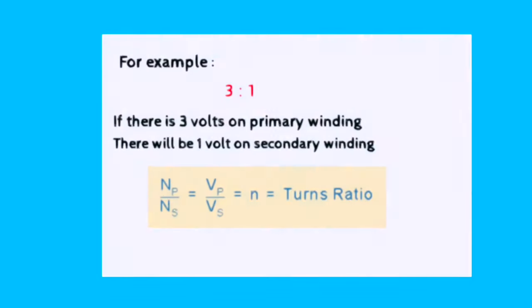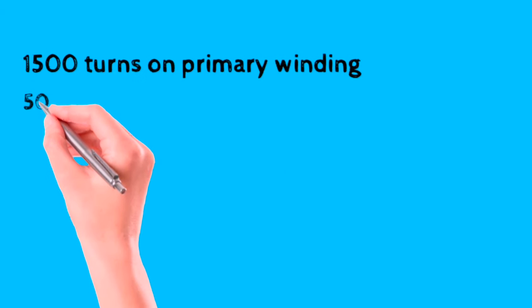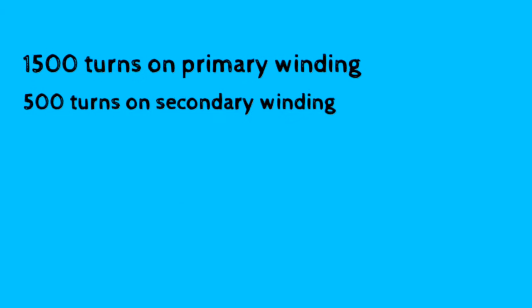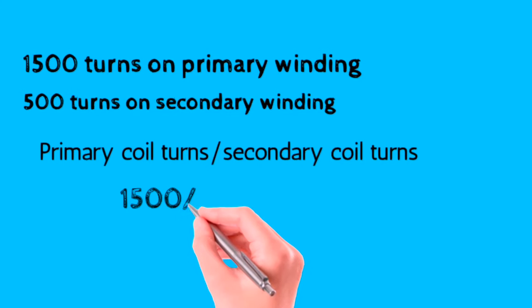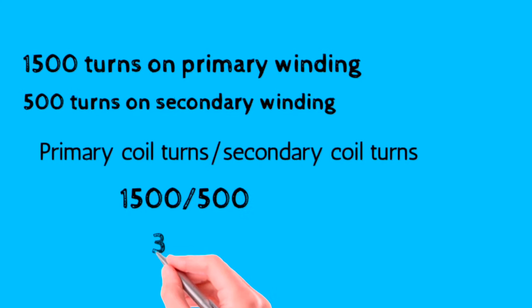For example, if number of turns in primary coil is 1500 and number of turns in secondary coil is 500, then number of primary turns divided by number of secondary turns gives us 3 to 1. It means if we apply 3 volts in primary coil, then it will give 1 volt in secondary coil. It means it is a step-down transformer.